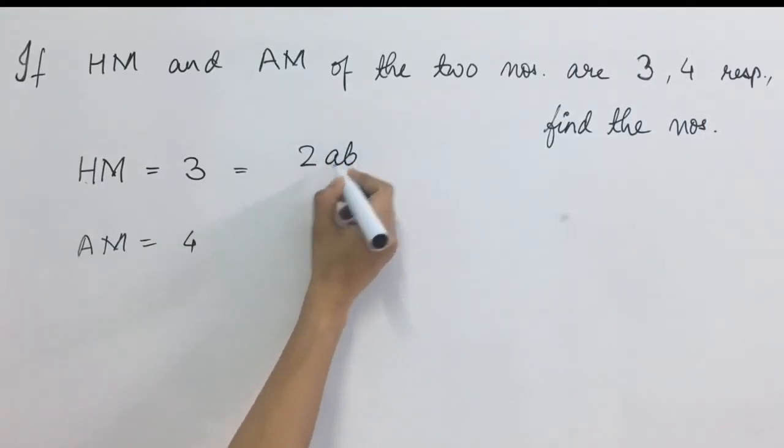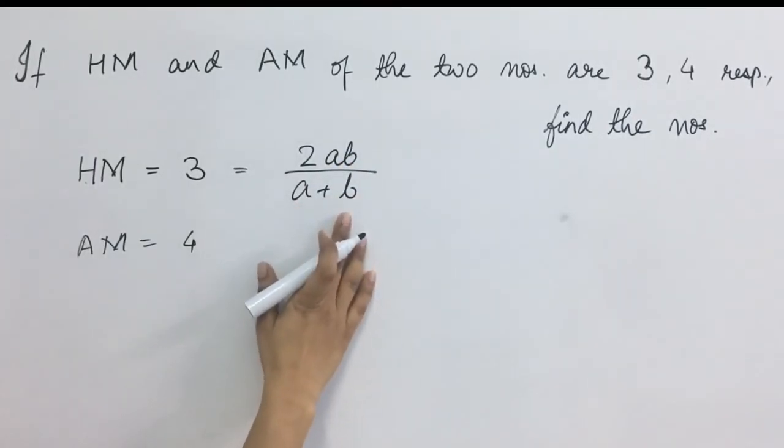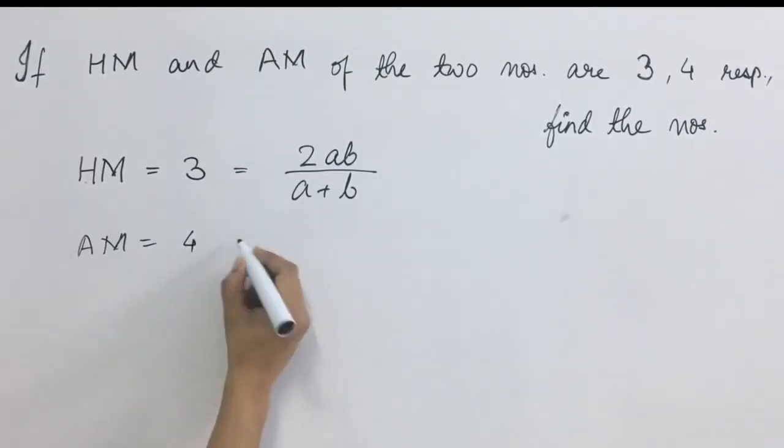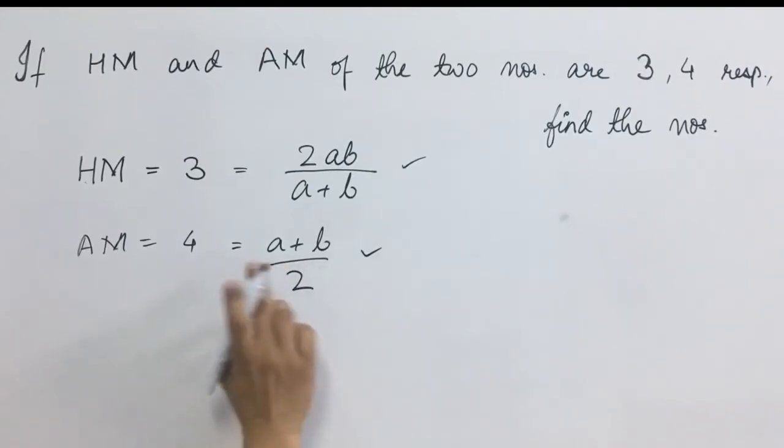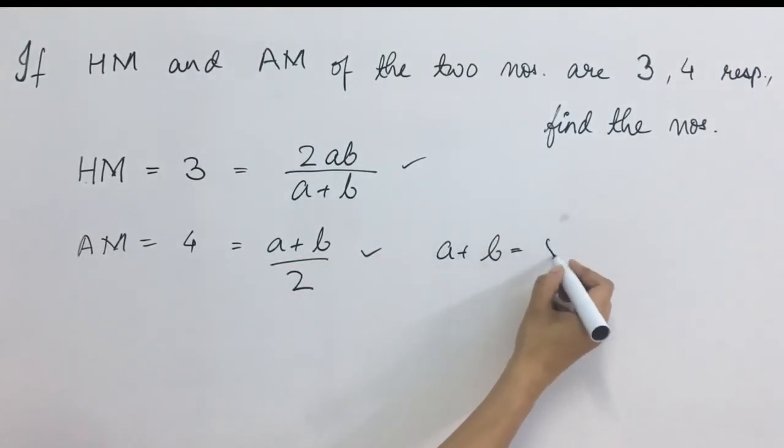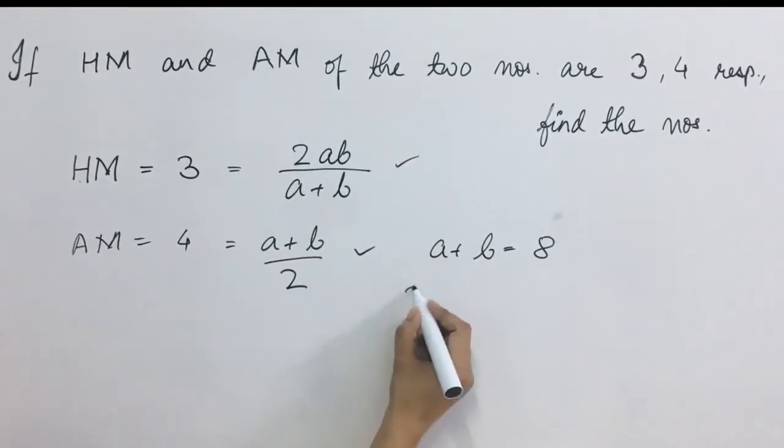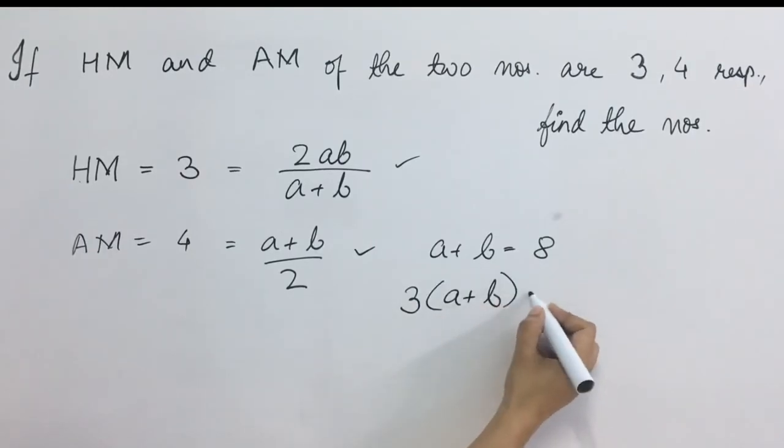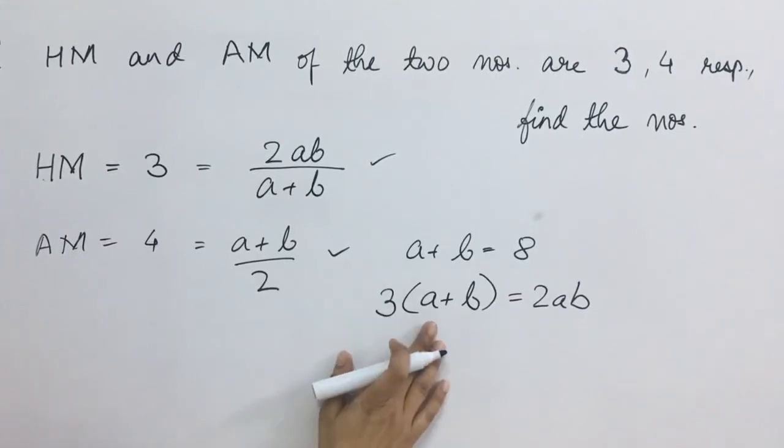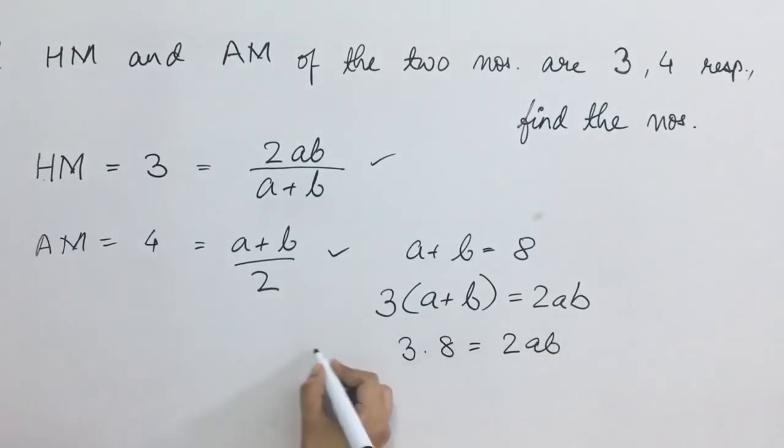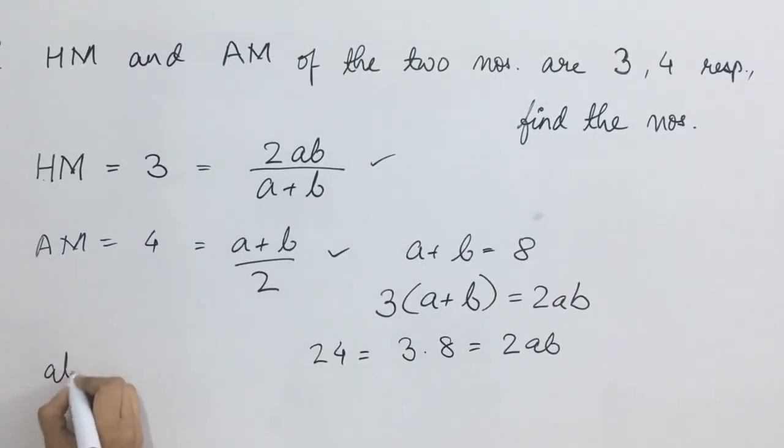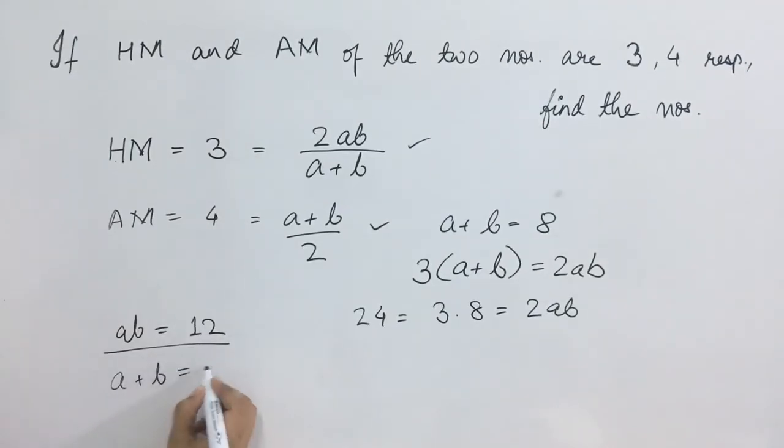So HM formula is equal to 2 times of AB upon A plus B. AB are the two numbers we have to find out. And AM is equal to A plus B upon 2. From these two cases we are getting two equations. One equation is A plus B is equal to 8. And the second equation is 3 times of A plus B is equal to 2 times of AB. Now we are given A plus B, and in the first equation A plus B value is what? So if we substitute that here, what are we going to get here is 2 times of AB is 24. So AB value is 24 divided by 2, that is 12.